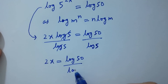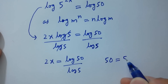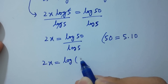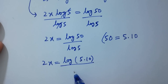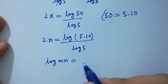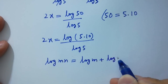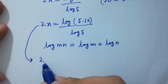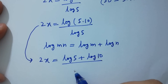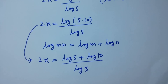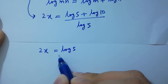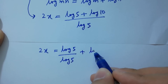As 50 equals 5 times 10, we have 2x equal to log of 5 times 10 over log 5. Using log mn equals log m plus log n, 2x equals log 5 plus log 10 over log 5.